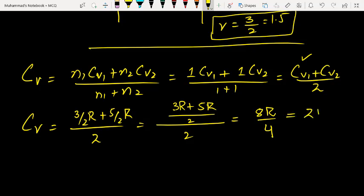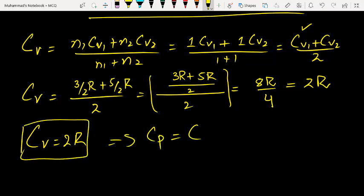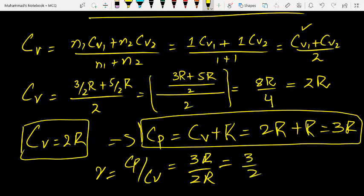Or finally, it will be 2R. So our collective CV is 2R. Now to find CP, collective CV plus R, so it will be 3R. So now I have two values: CP and CV. Now if I want to find the gamma, then collective CP divided by collective CV equals 3R by 2R, answer is 3 by 2, answer is again 1.5.